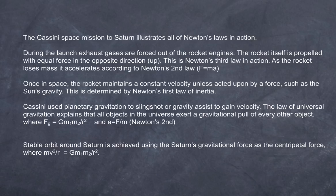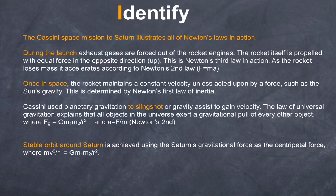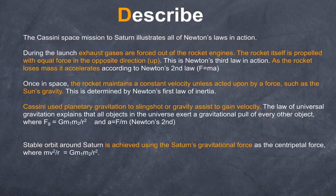I would identify first, describe second, and then explain. Here is a reasonably good response — let's pull it apart. You can see there are four paragraphs covering the three aspects of the mission and introducing all the laws involved. They all start with identifying: Newton's laws, during launch, once in space, the slingshot effect, stable orbit. Then we have a description: exhaust gases are forced out of the rockets, the rocket maintains constant velocity, Cassini uses planetary gravitation to slingshot and gain velocity, a stable orbit around Saturn is achieved using Saturn's gravitational force.